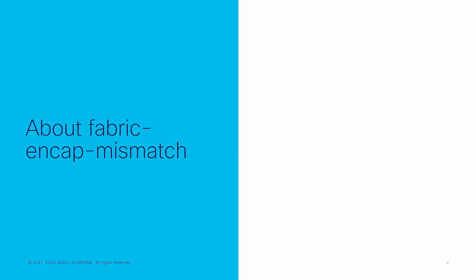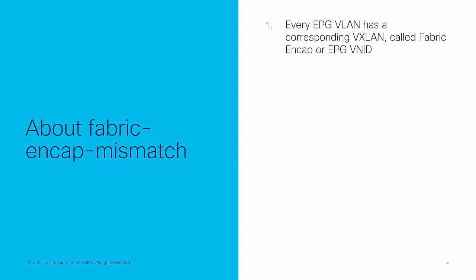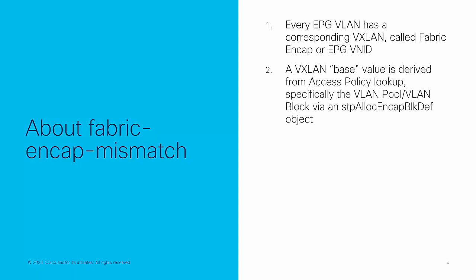Let us begin by summarizing the why and how. In ACI, every EPG VLAN has a corresponding VXLAN called the Fabric NCAP or EPG VNID. The VXLAN base value referenced during allocation is derived from the defined access policies, specifically the VLAN pool VLAN block relationships. The object that represents this is of the stpalloc NCAP block def class.